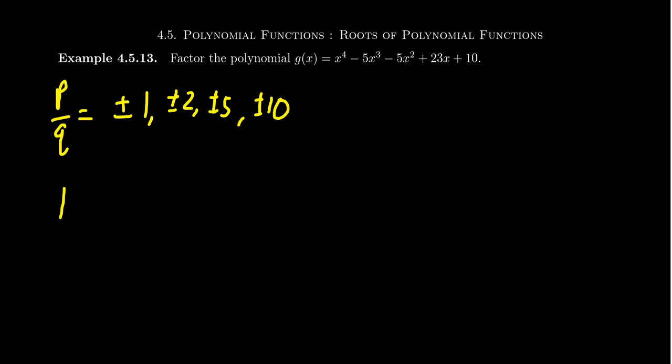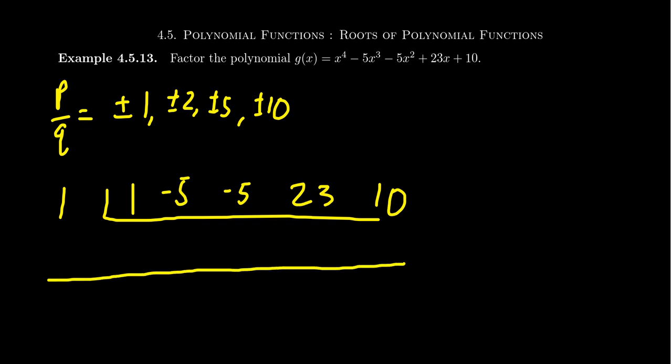So we're going to divide by 1 using synthetic division. Looking at the coefficients in descending order, we get 1, -5, -5, 23, and 10. Be very cautious. If any numbers got skipped, you do need to put a 0 in there. So we go through the process here. Bring down the 1. 1 times 1 is 1. -5 is -4. Times 1 is -4. -5 is -9. Times 1 is -9. 23 minus 9 is 14. Times 1 is 14. Plus 10 is 24. So it didn't work. So +1 we can take off of our list.